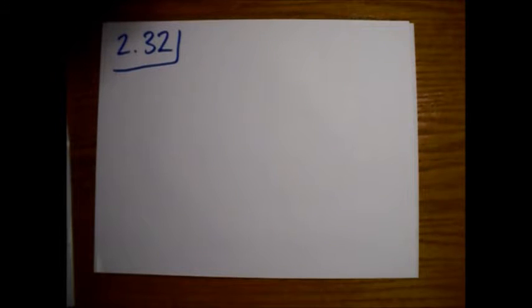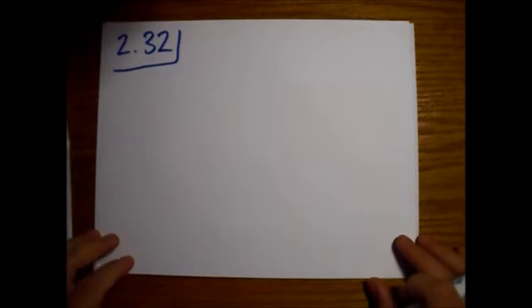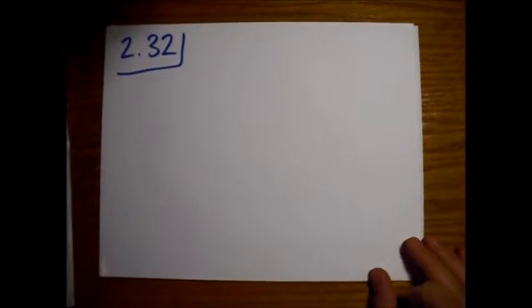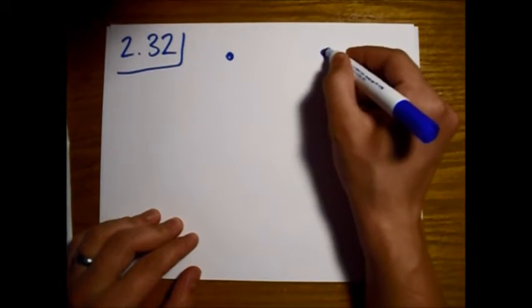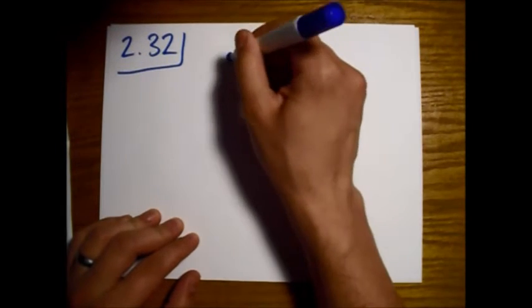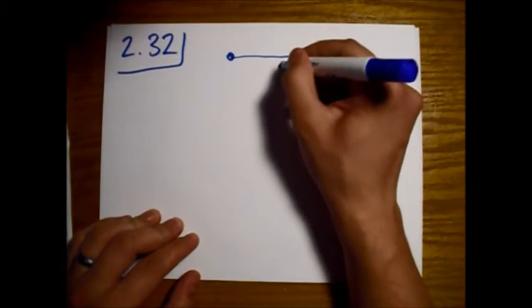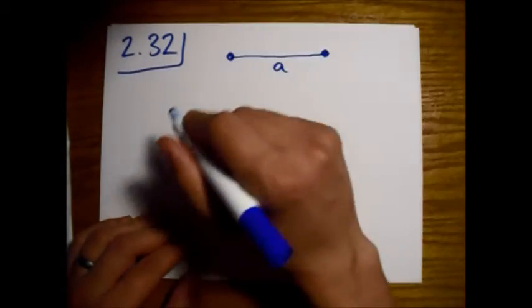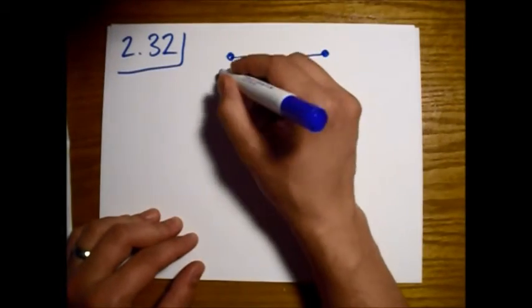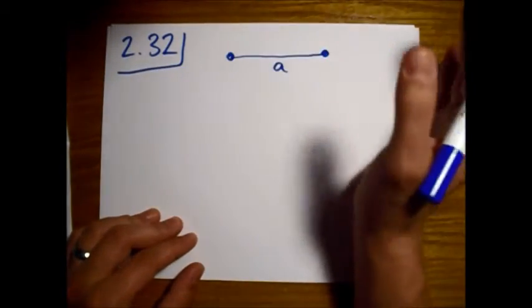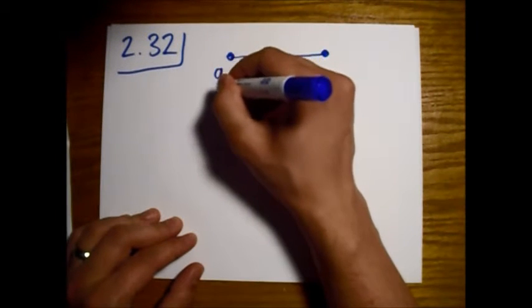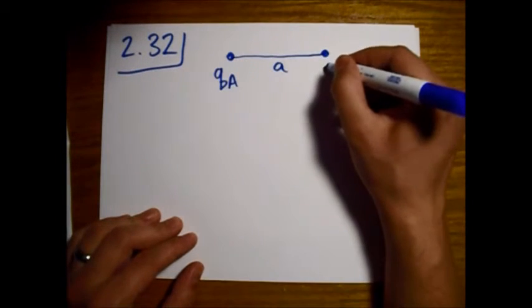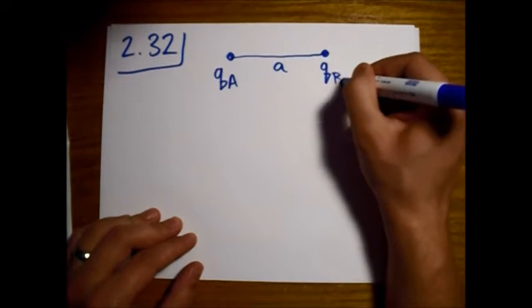Griffith's Electrodynamics problem 2.32: we have two different charges tied together by a string. The string has length little a, and they're both like charges. This one has a charge of Q_A, and this one has a charge of Q_B.